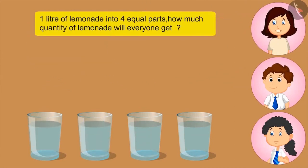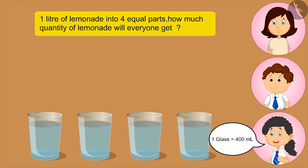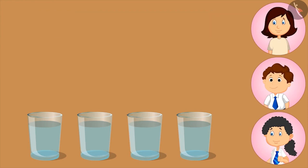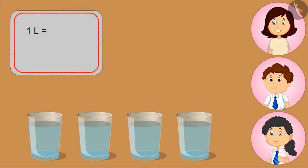Now tell me, if I divide one litre of lemonade into four equal parts, how much lemonade will everyone get? 400 ml? No, this is not right. You tell, Bholu. I don't know. Please explain, Mom. How many millilitres are there in a litre? 1000 millilitres. Correct. Now if I fill these two glasses, how much lemonade will be left in the jug? Half the jug is still full.